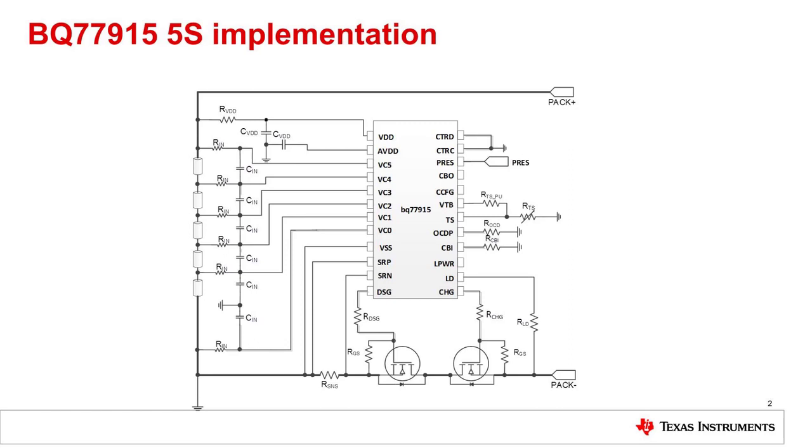The BQ77915 is a primary protector for lithium-ion batteries, providing overvoltage, undervoltage, overcurrent charge and discharge, temperature, and open wire protections. It also has a hibernate mode and cell balancing. In this video, we will cover the cell balancing feature.